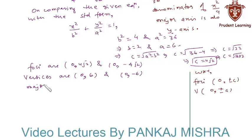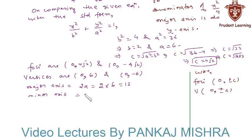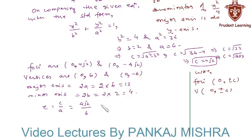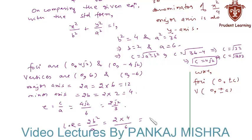Length of major axis is equal to 2a, that is 2 × 6 = 12. Length of minor axis is equal to 2b, that is 2 × 2 = 4. Eccentricity is equal to c/a, so substituting the values of c and a we have 4√2/6 = 2√2/3. Finally, length of latus rectum is equal to 2b²/a = 2 × 4/6 = 4/3.